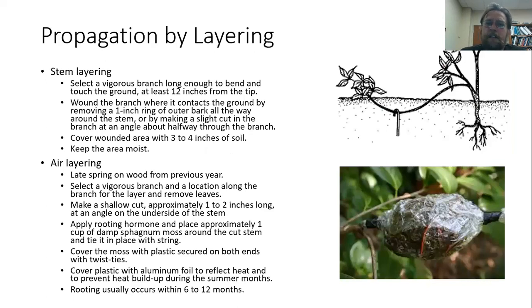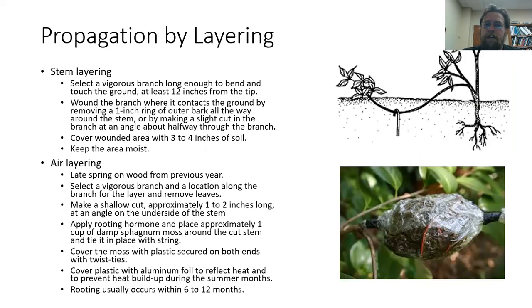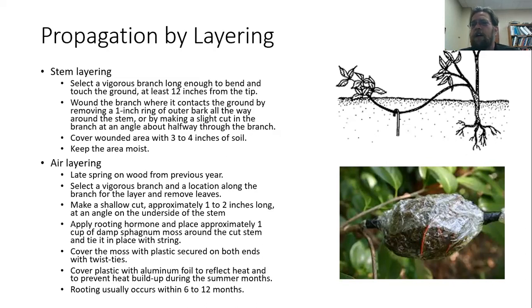Another way to propagate azaleas is by layering. Simple layering: take a vigorous branch long enough to bend and touch the ground, wound the bottom of it, apply a little rooting hormone to the cut, bury that section about three to four inches under the soil, and keep the area moist. The tip of the branch comes back out from the soil. Once the wounded area develops roots, cut it away from the parent plant and you have your propagated plant.